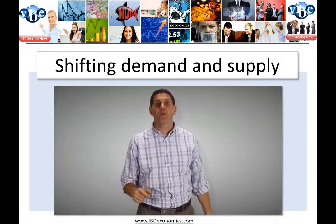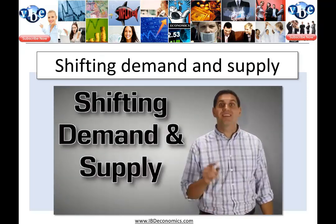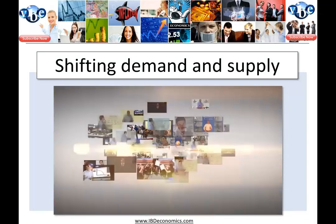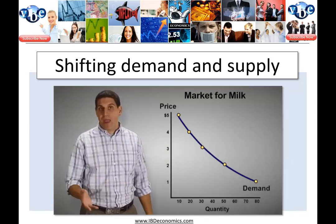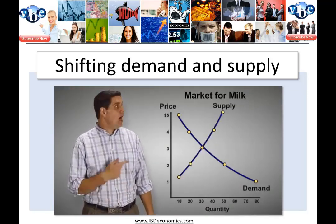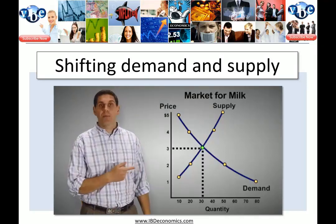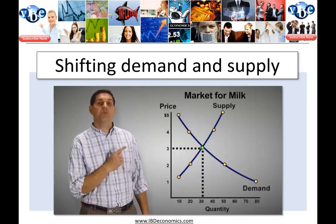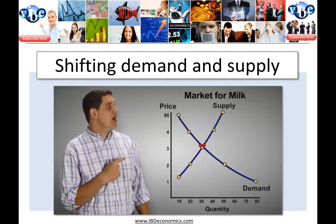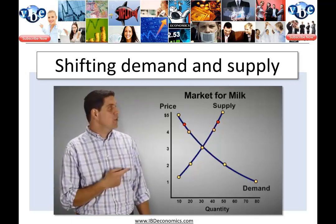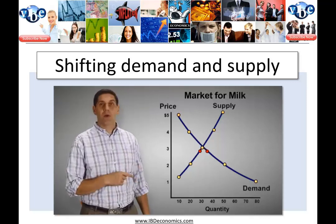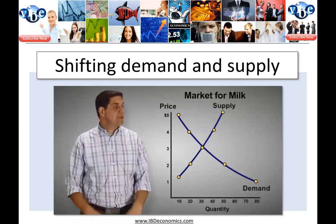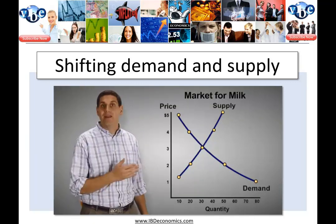How are you doing, econ students? This is Mr. Clifford. Welcome to ACDC Econ. Right now we're going to talk about shifting demand and supply. In previous videos, you learned about demand and why it's downward sloping, and about supply and why it's upward sloping. And of course, you understand the idea of equilibrium — the only place where the quantity demanded exactly equals the quantity supplied. You should also understand why, when there's a change in price, that moves along the curve. For example, when the price goes up, the quantity supplied increases and the quantity demanded decreases, causing a surplus. When the price falls below equilibrium, the quantity demanded increases, the quantity supplied decreases, and that causes a shortage. That's what happens when there's a change in price — it moves along the demand and supply curves.